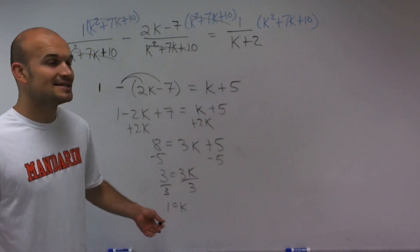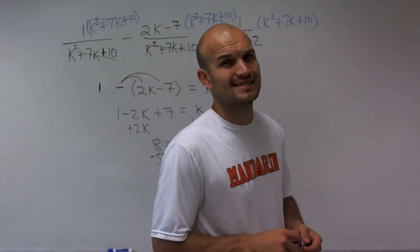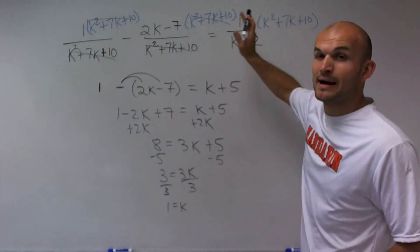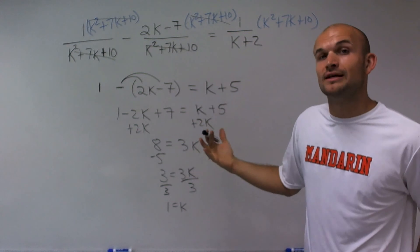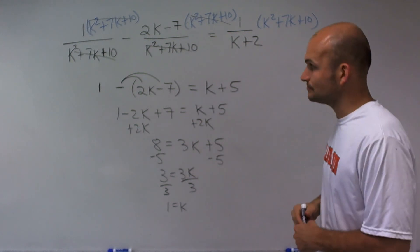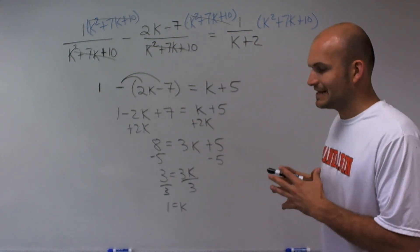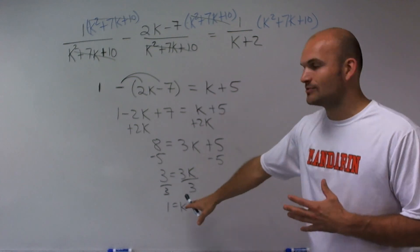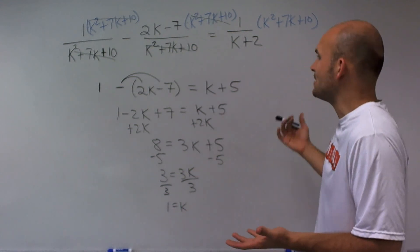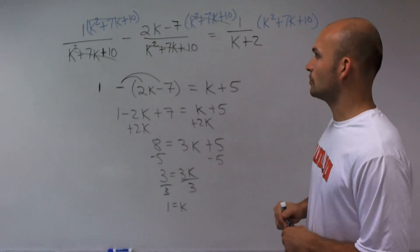So my answer here is 1 equals k. But it's very important for us to understand that since I multiply by my variable, I have an opportunity for having extraneous solutions. So when having extraneous solutions, we've got to make sure we check our answers. So I'm going to show you just by plugging it back in what will happen and see if it works.